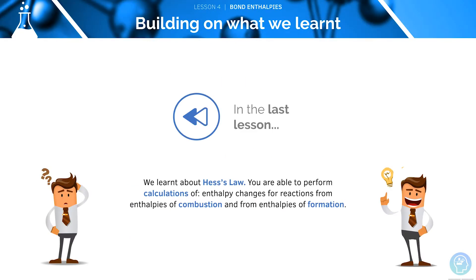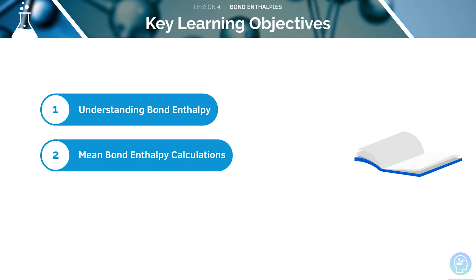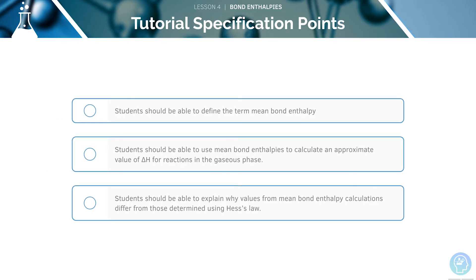In the last lesson, we learnt about Hess's law and how to perform some calculations. Here are some key learning objectives for this session: first, we want to understand bond enthalpy, and then we will look at calculations involving mean bond enthalpies. Here are the AQA specification points for this tutorial — pause the video now to have a read through them before we begin.